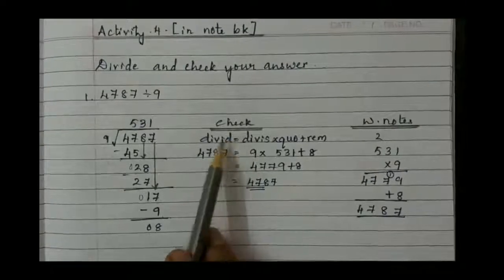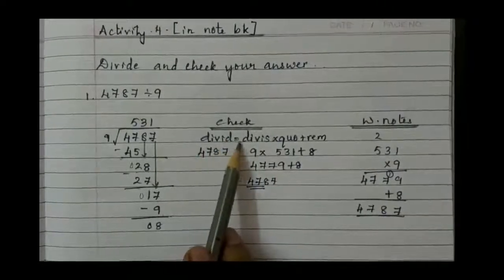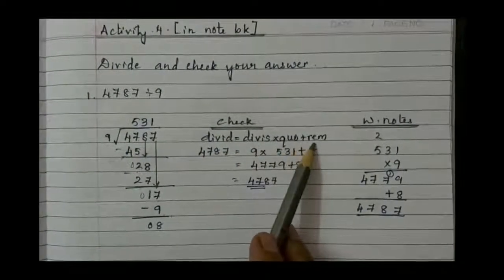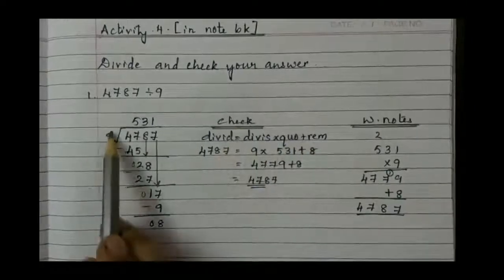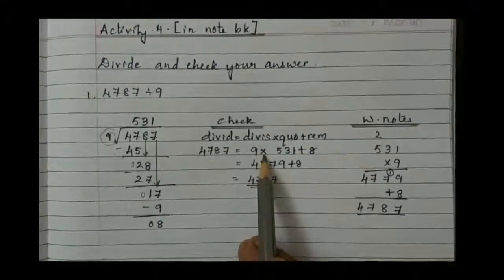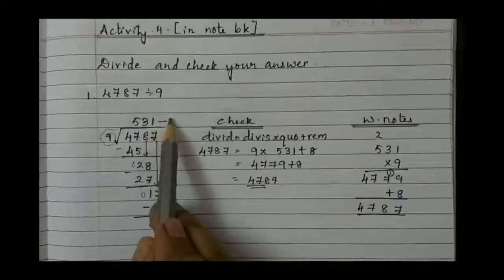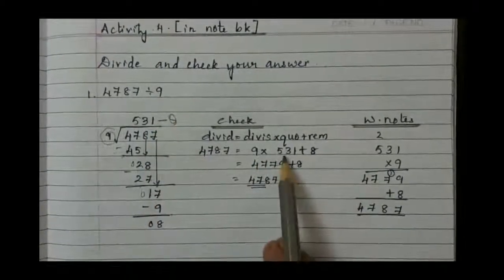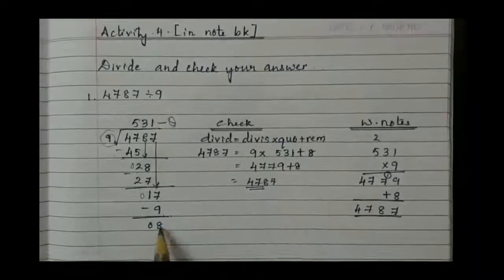Go for check. Write down the formula: Dividend is equal to divisor into quotient plus remainder. Divisor is 9. Write down 9 into multiplication symbol, then take the quotient, that is 531, plus remainder.